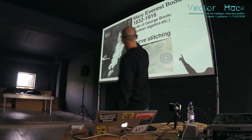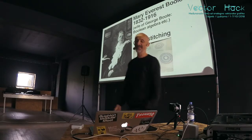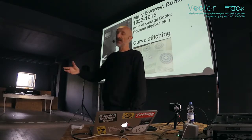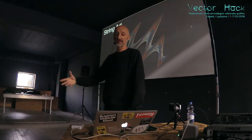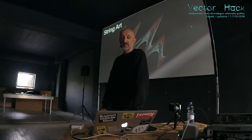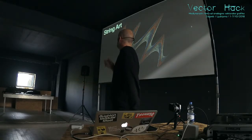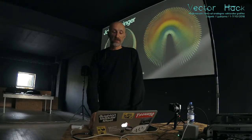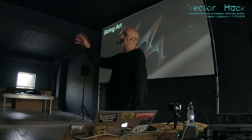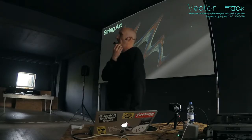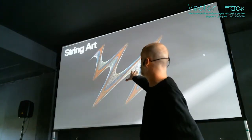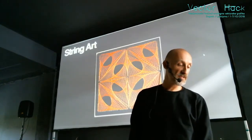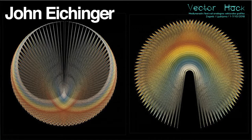Mary Everest Boole tried to make maths more accessible by making these curve stitching projects for people to do. That kind of thing continued into people's houses in the 60s and 70s with string art. It's quite interesting going into charity shops and coming across these sorts of things. You'd often find an owl or a boat, or go round to auntie somebody's house and there'd be some kind of sunset thing. But now and again you'd come across something that looked a bit more abstract - and I thought, that's a good connection to what we're looking at here.